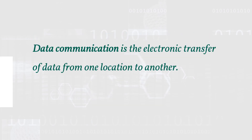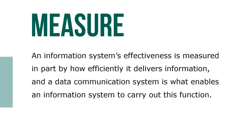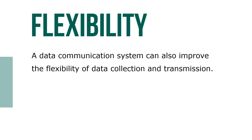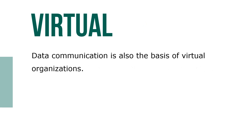Data communication is the electronic transfer of data from one location to another. An information system's effectiveness is measured in part by how efficiently it delivers information, and a data communication system is what enables an information system to carry out this function. Because most organizations collect and transfer data across large geographic distances, an efficient data communication system is critical. It can also improve the flexibility of data collection and transmission processes.